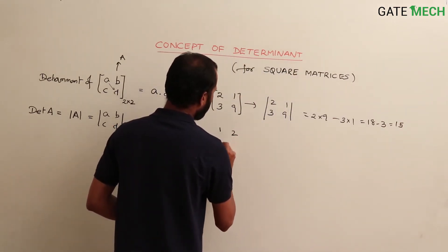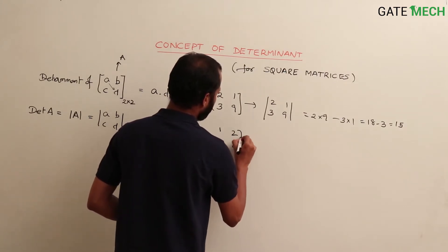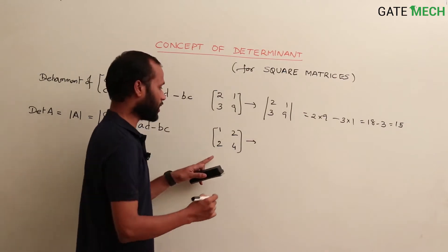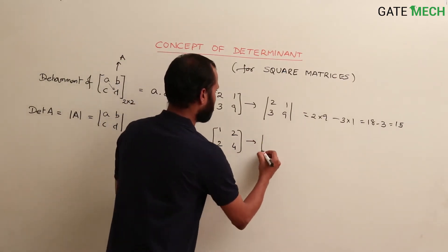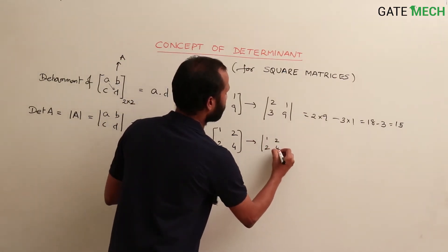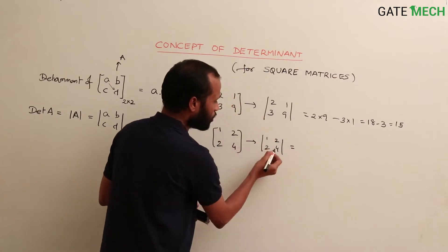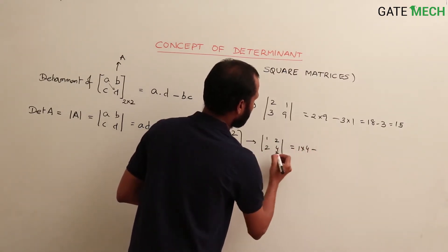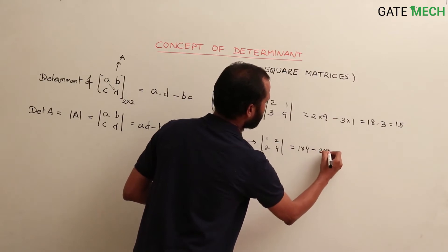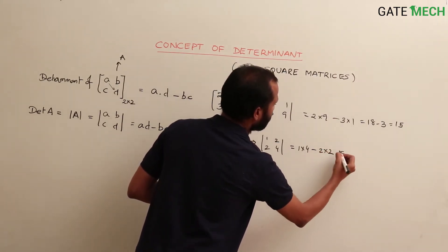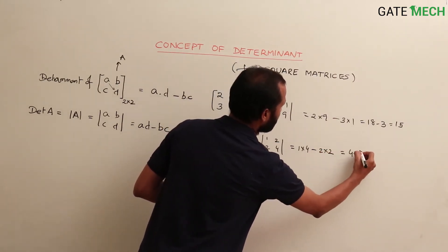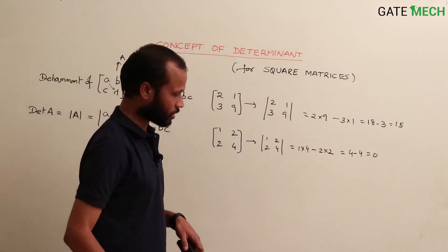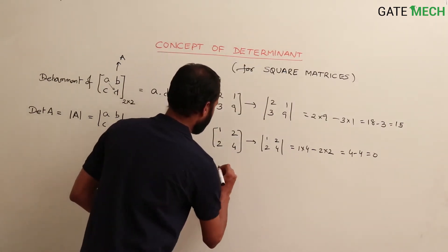Similarly, another matrix: 1, 2, 2, 4. What is its determinant? det(1 2; 2 4) equals 1 into 4 minus 2 into 2, which is 4 minus 4, equal to 0.